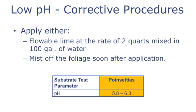If the substrate pH is too low, a product such as flowable lime will help increase the pH. Before you do so, make sure that the substrate pH is in fact too low. Apply the corrective action and then rinse the foliage after application. Also retest the substrate pH to confirm that it's within the acceptable range between 5.8 and 6.3.